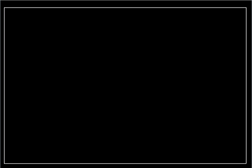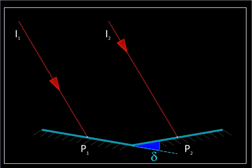Let us start with the two window panes P1 and P2 making an angle delta between them, and these are the two incident rays I1 and I2. We will draw normals where they strike, N1 and N2, and as you can see since the panes are not parallel to each other, the normals are not parallel.